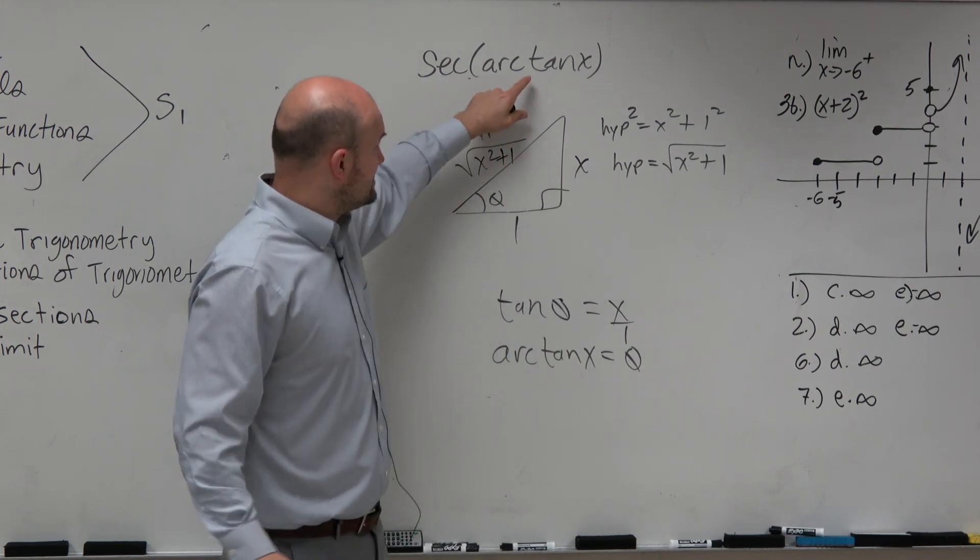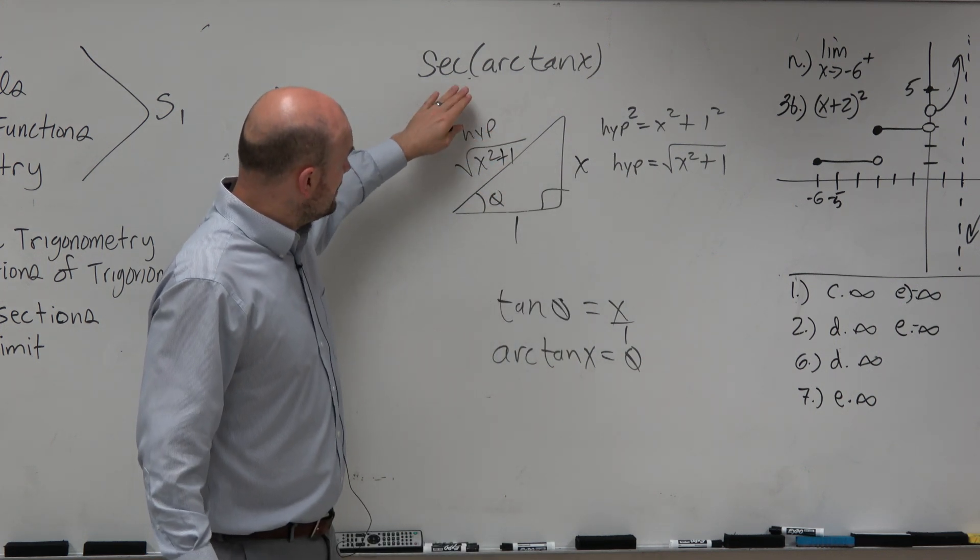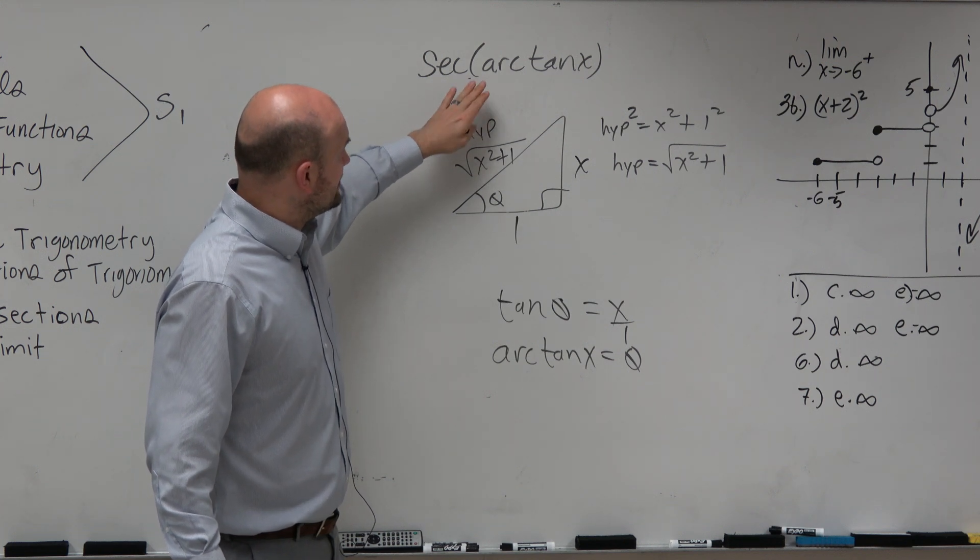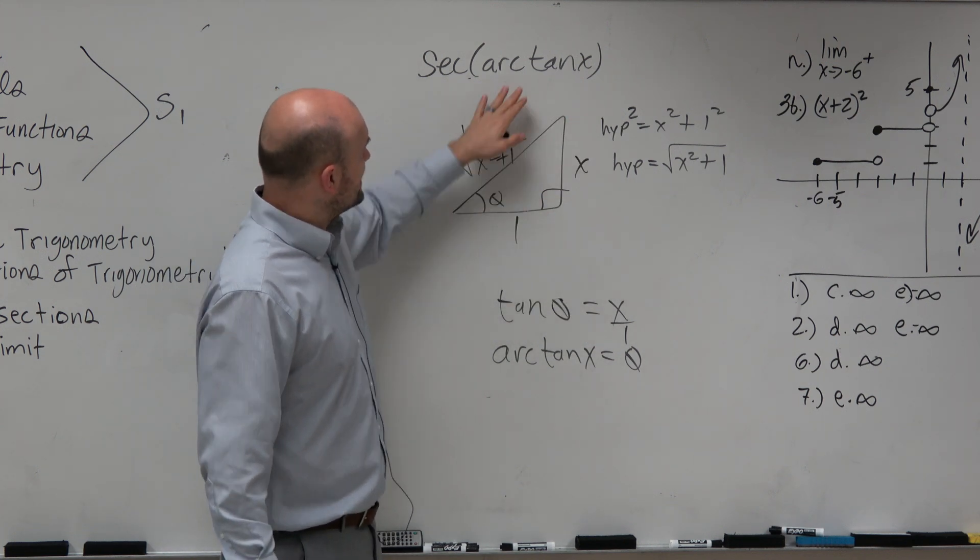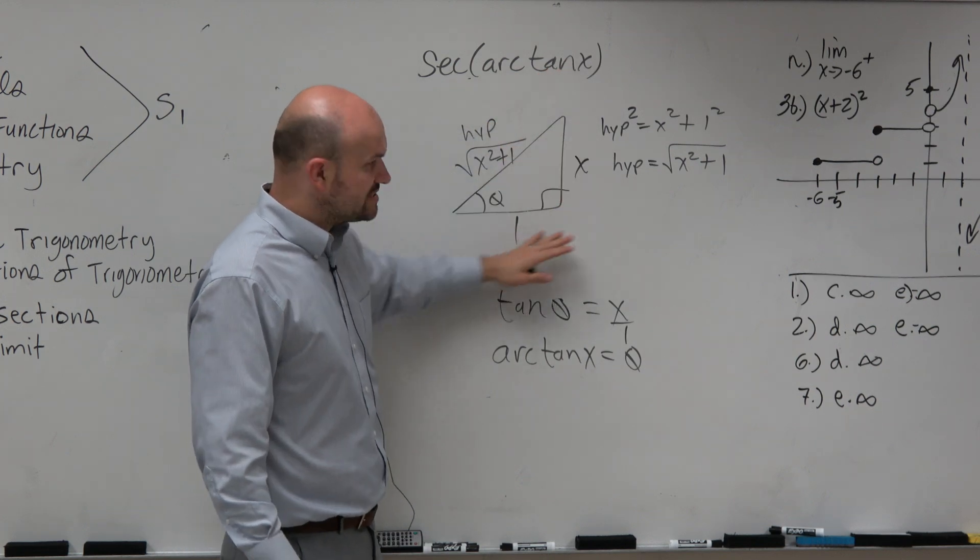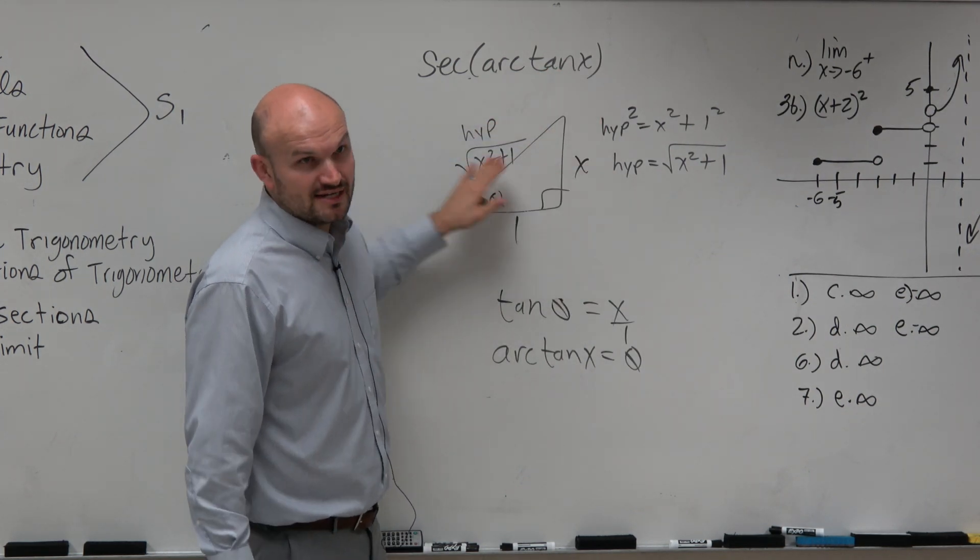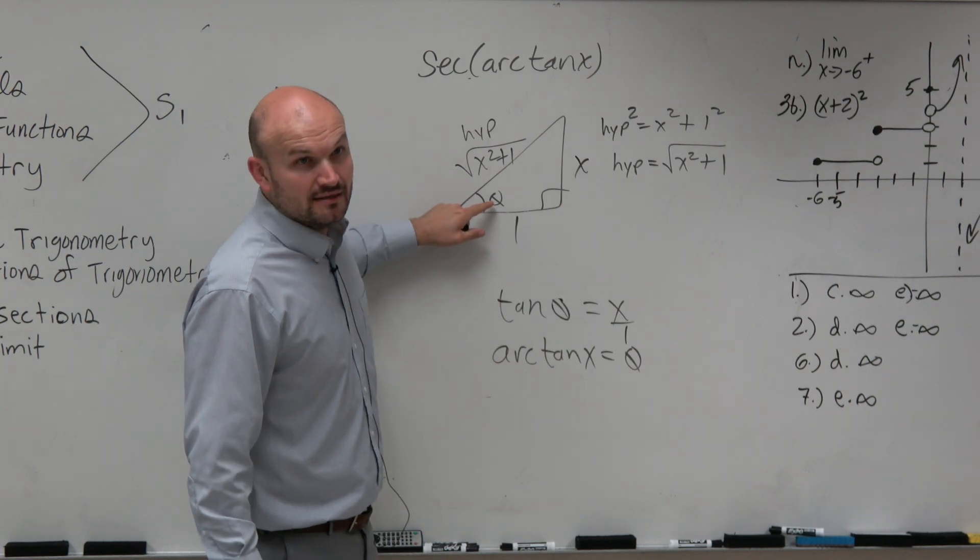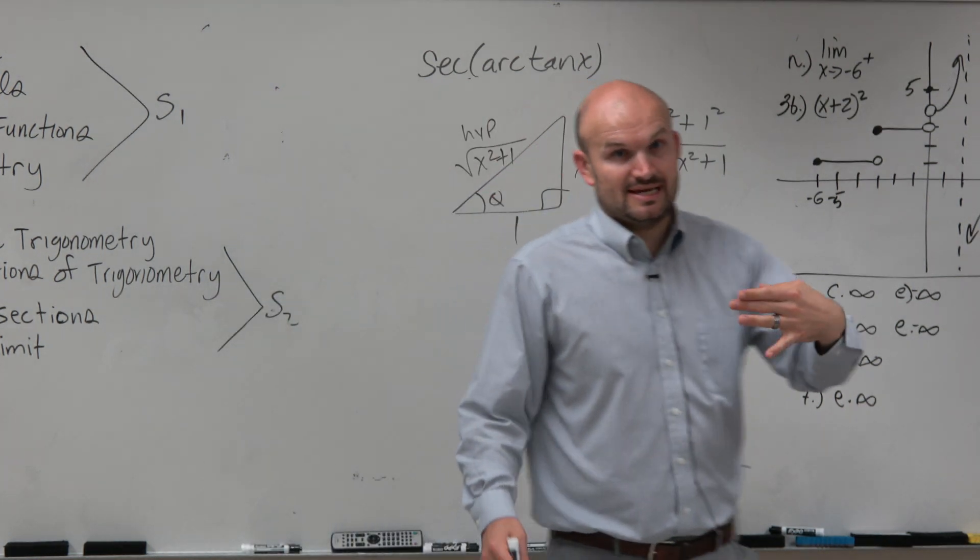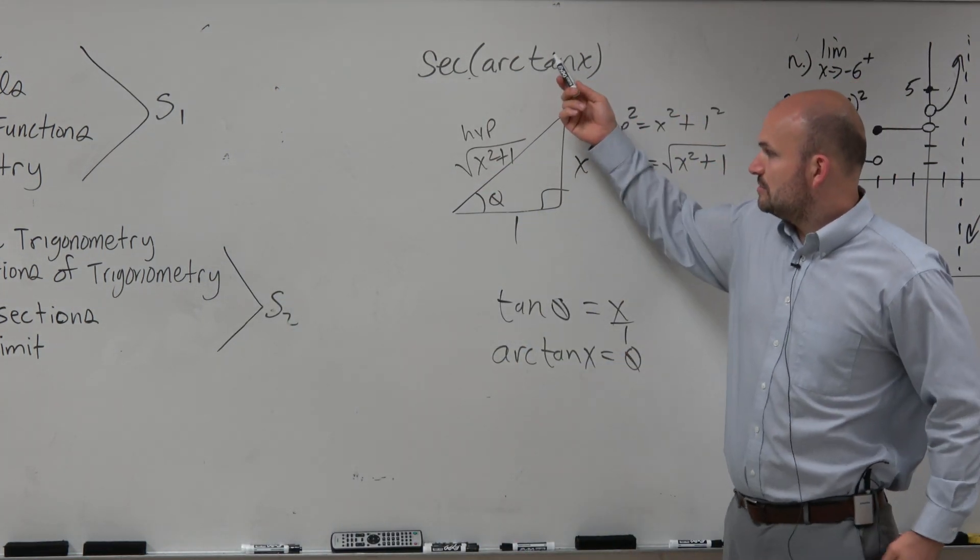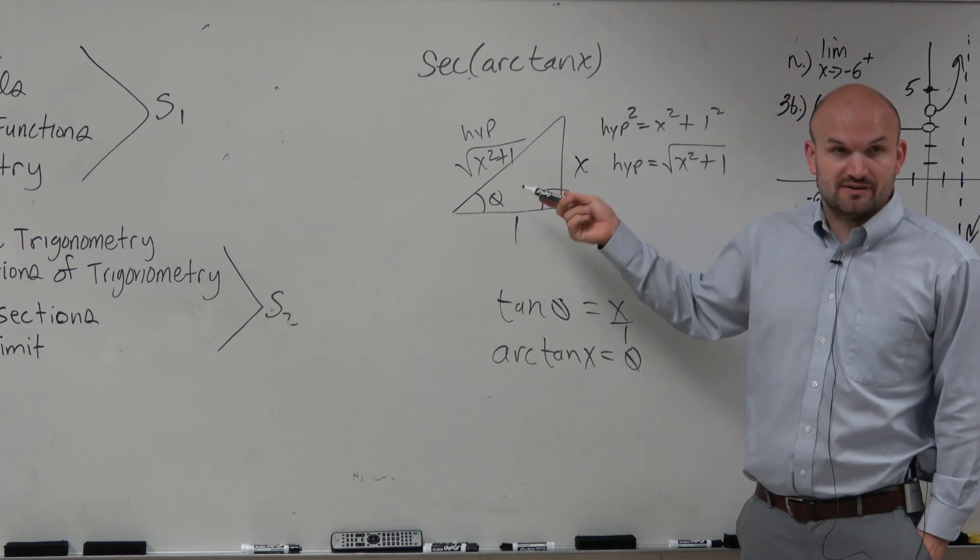So the inverse tangent, so when you're looking at this, what this creates is the arc tangent of x produces this triangle. So here's the theta of the arc tangent of x. That produces that angle theta. But the main important thing is, can we figure out now what the secant of theta is?